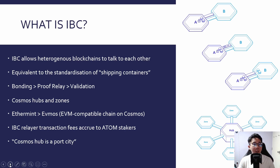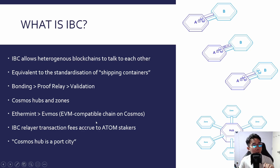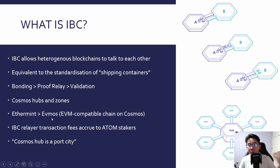Speaking of Ethereum compatibility, Cosmos itself has a blockchain called Ethermint, now rebranded to EVMOS — an EVM-compatible blockchain on Cosmos. In the future, one of the zones will be EVM-compatible, and Ethereum applications, dApps, and smart contracts will be deployed on Ethermint/EVMOS. They will be able to transact, transfer tokens, and talk to all the hubs connected to the Cosmos Hub.